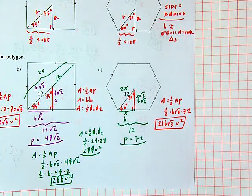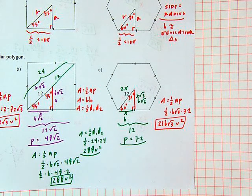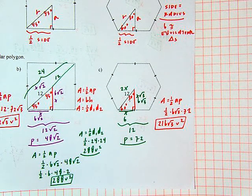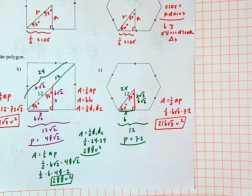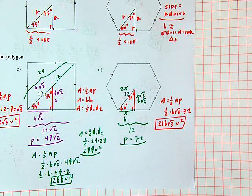Our big takeaway from today is learning the 30-60-90 pattern and extending it to area of regular polygons. Looking at an equilateral triangle, a square, and a regular hexagon — all have a special right triangle built in that makes it easier to calculate the overall area. For any regular polygon, we can use the one-half apothem times perimeter formula when we know all of those details.